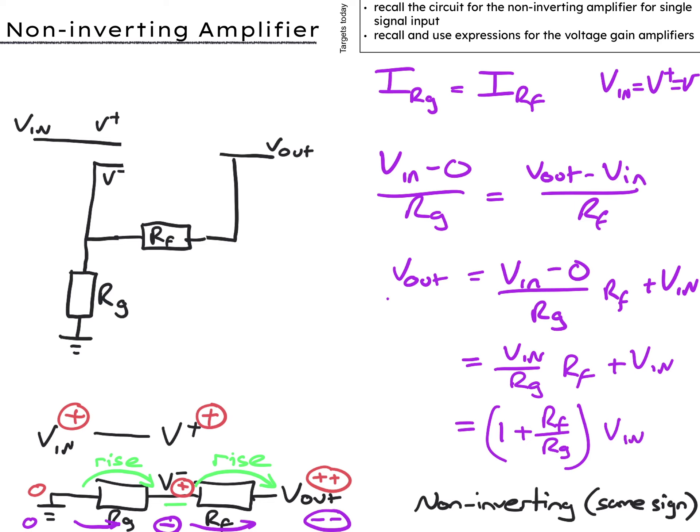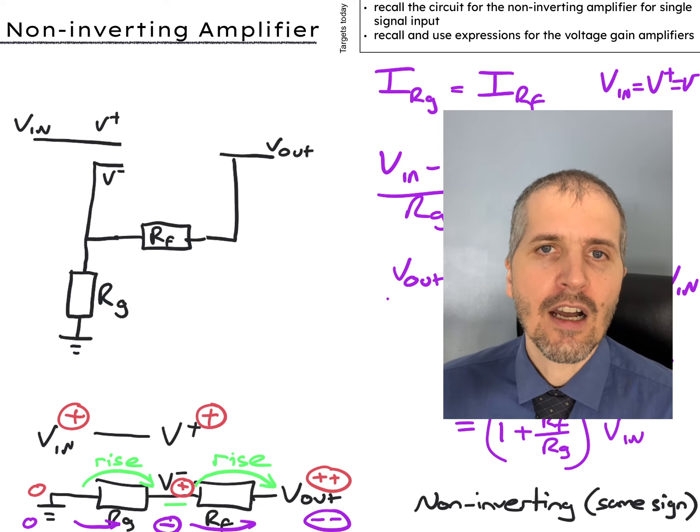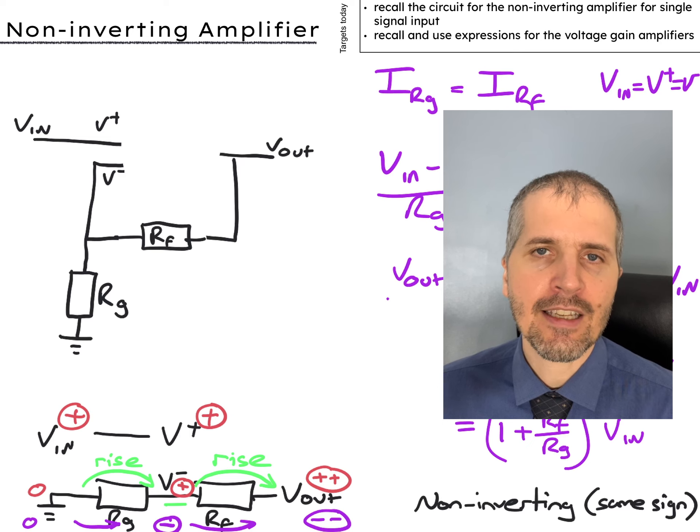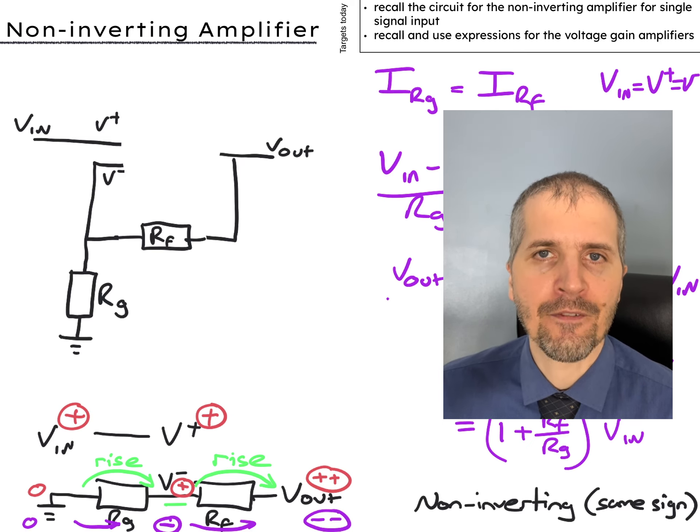This means that the gain is one plus Rf over Rg. So now you know how to draw a non-inverting amplifier circuit. You also know how to derive an expression for the gain of the circuit.